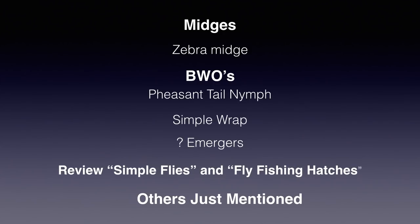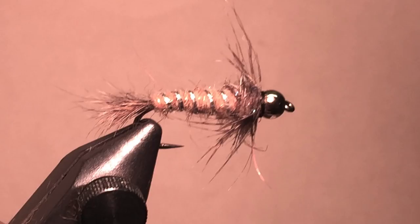Now let's look at our tying list. We'll definitely need midges and blue-winged olives. Tie up some size 20 beadhead zebra midges, size 18 to 20 pheasant tail nymphs, and some simple wraps. I always bring some small soft hackles along, which will usually work as emergers in this early season — later in the season you may need more specific emergers. If you need help tying any of these or want to review more about midges and blue-winged olives, please review my series on simple flies and fly fishing hatches as related to midges and blue-winged olives. Tie some of your favorite leeches and streamers also. My favorite sow bug and scud pattern is the Minky, which is also shown in the simple fly series.